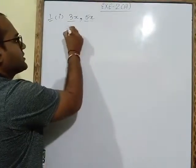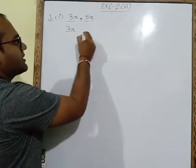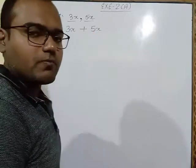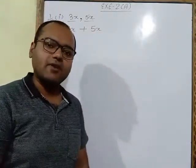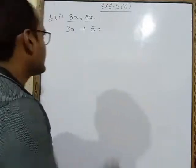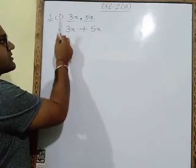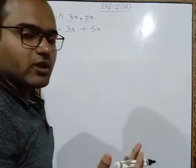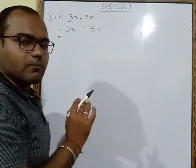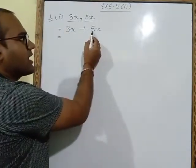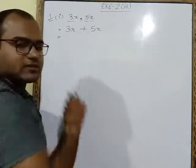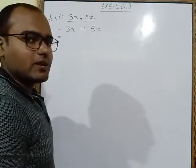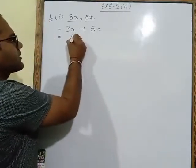First you will write 3x, then write 5x and put a plus sign in between, because we have to do addition. Now check the sign of 3x on the left — no sign is given, so 3x is positive. On the left of 5x, there is a plus sign, so 5x is also positive. Plus and plus gives plus, so we add: 8x.